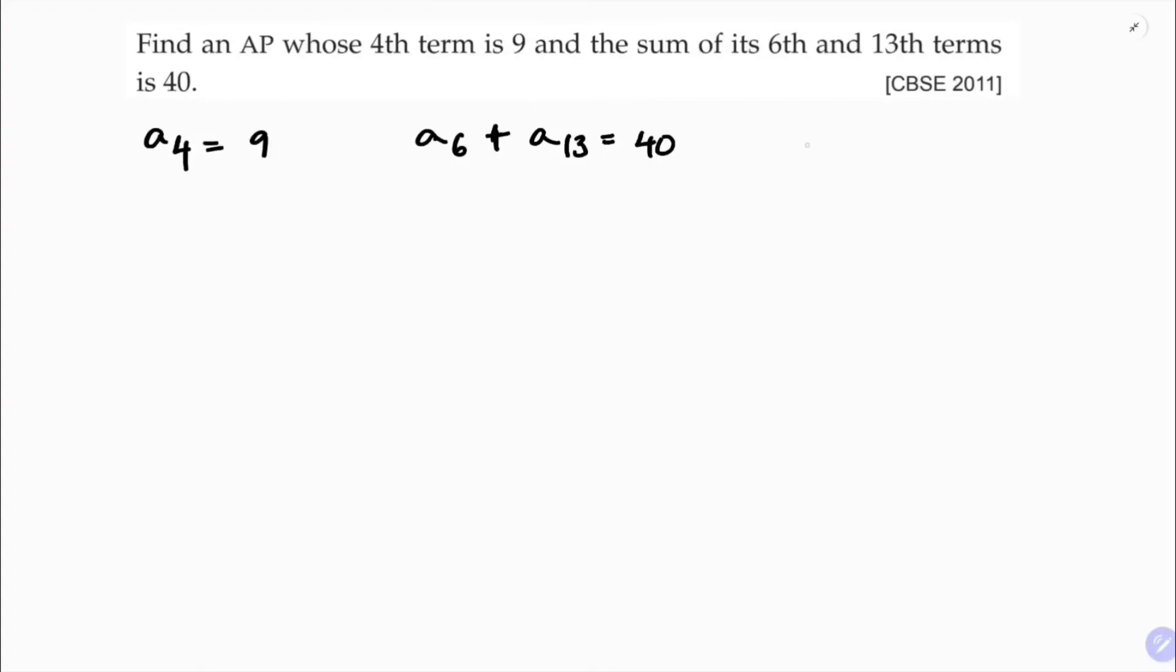Now see here nth term formula is AN equals A plus N minus 1 into D. So if I find A4, A4 is A plus 3D because here in place of N, 4 minus 1 into D. So A plus 3D, so A plus 3D value is 9. A plus 3D is 9. Now this is equation 1.